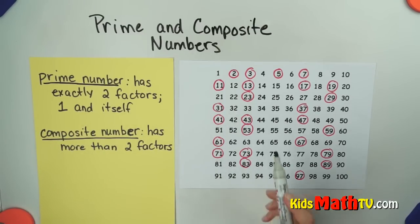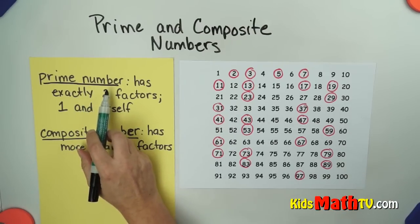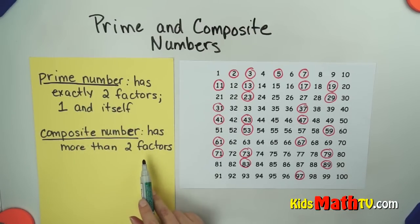So if a number has exactly two factors, such as the ones here in red, it is a prime number. If it has more than two factors, it is a composite number. And that's the end of our lesson on prime and composite numbers.